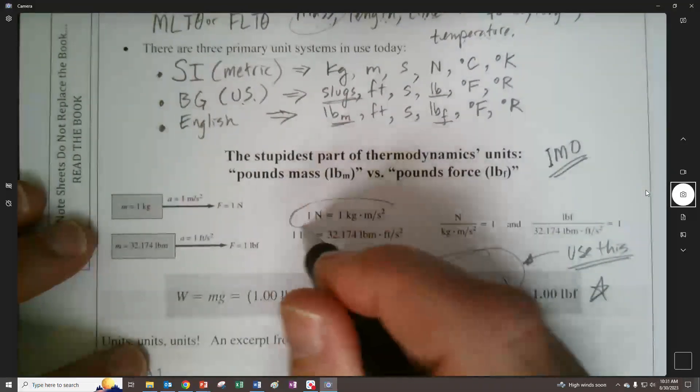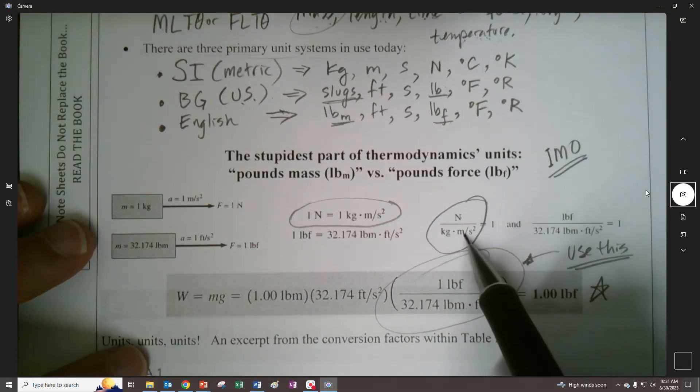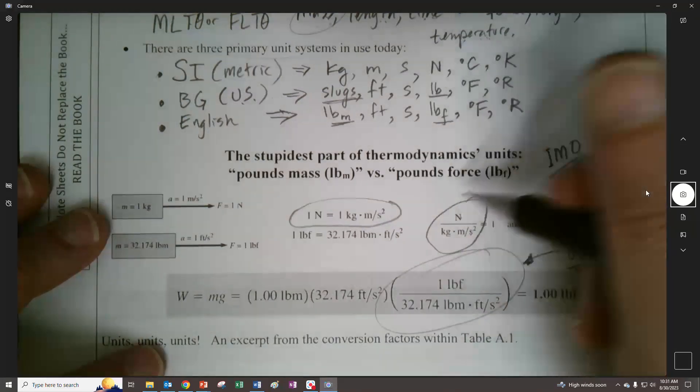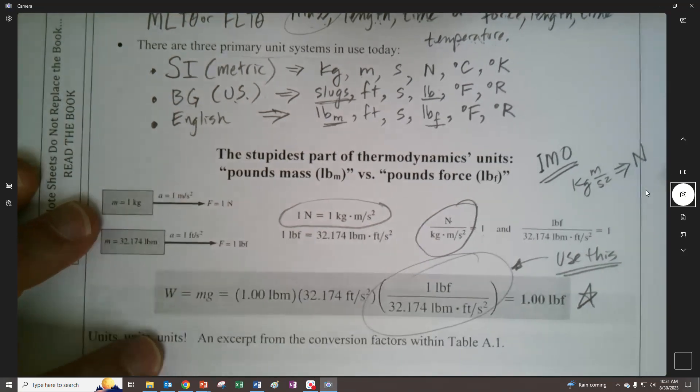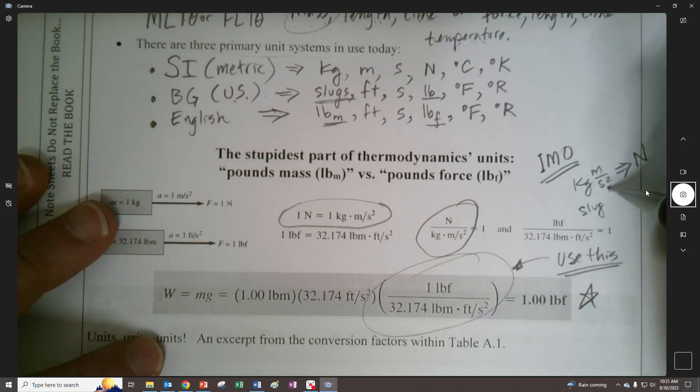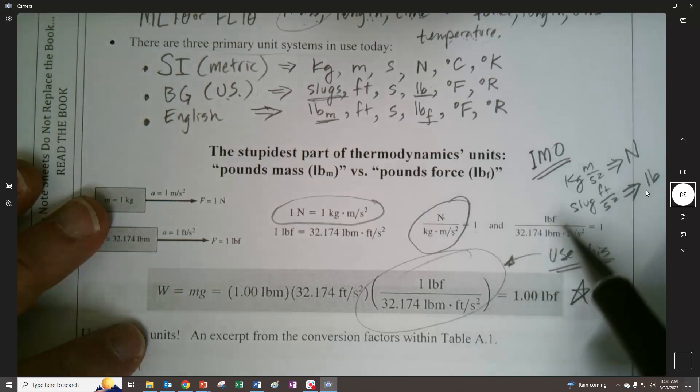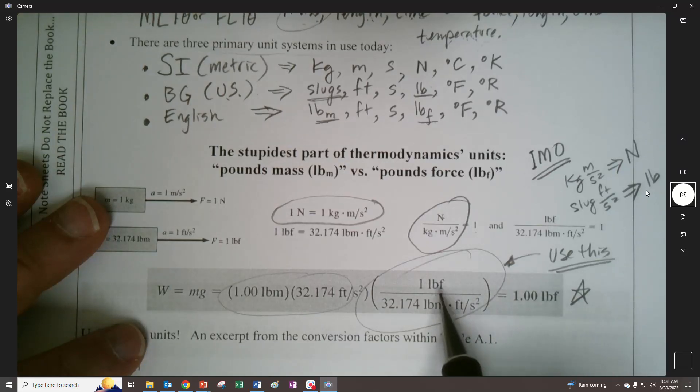If you just think of this right here, that right there, and keep it in the back of your mind. Any time you're dealing with a pounds mass and what you want to find is a pounds force, use this conversion. You could think of this thing in terms of what happens with a Newton kilogram meter per second squared. That equals to one. What I usually think of is when I see the grouping of kilogram meter per second squared, poof, that turns into a Newton. If I see a slug feet per second squared, poof, that turns into a pound. But if you see a pounds mass foot per second squared, you need to multiply it by this thing to turn it into a pound force.